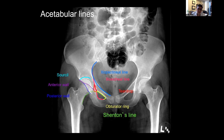So when you put it all together, these are the things: the six cardinal lines plus the obturator ring and Shenton's line. When you're looking at an acetabular fracture, those are the lines you want to look at to define those injuries.